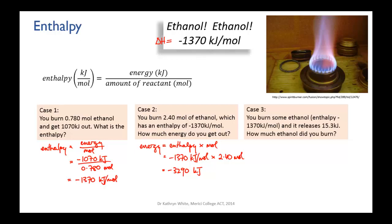The third possibility: if you know the enthalpy and you measure the energy released during a reaction, you can calculate how much ethanol was burnt. For example, if 15.3 kilojoules of energy has been released, rearrange the equation so moles is the subject: moles equals energy divided by enthalpy, which is −15.3 kJ ÷ −1,370 kJ/mol = 0.0112 moles of ethanol must have been burnt.